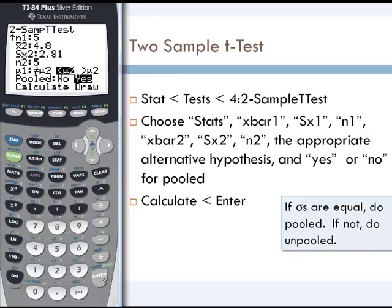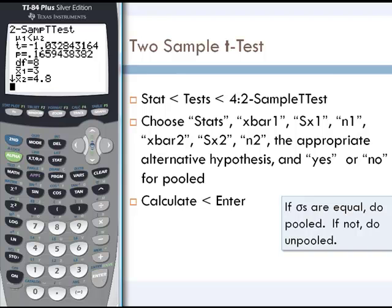We just press calculate and we get a p-value of 0.1659, and that means that the evidence that mu1 is actually less than mu2 is weak.